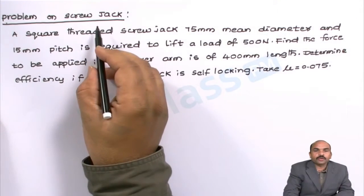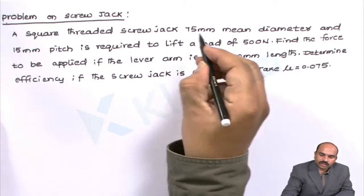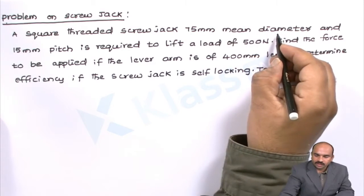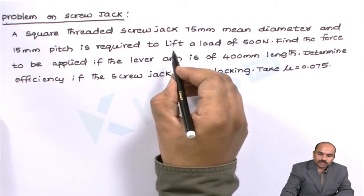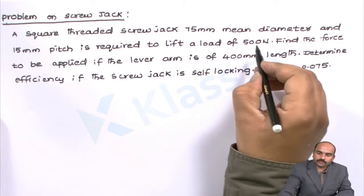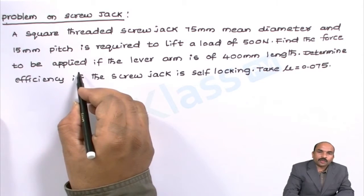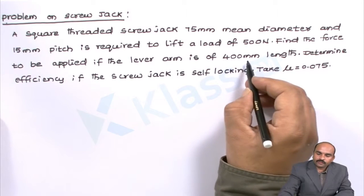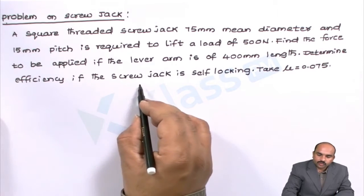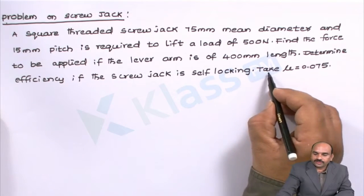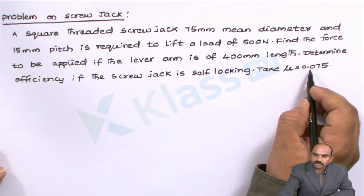Let us take a problem on screw jack. A square threaded screw jack with 75 mm mean diameter and 15 mm pitch is required to lift a load of 500 newtons. Find the force to be applied if the lever arm is 400 mm length. Determine the efficiency if the screw jack is self-locking. Take coefficient of friction mu as 0.075.